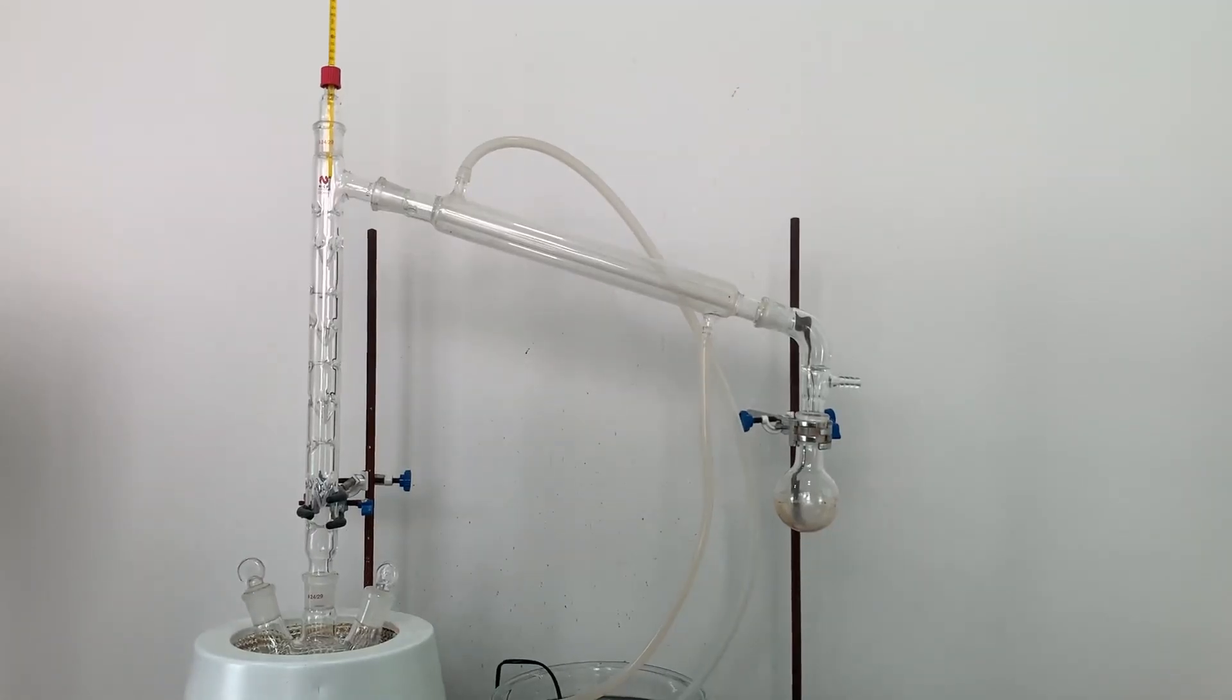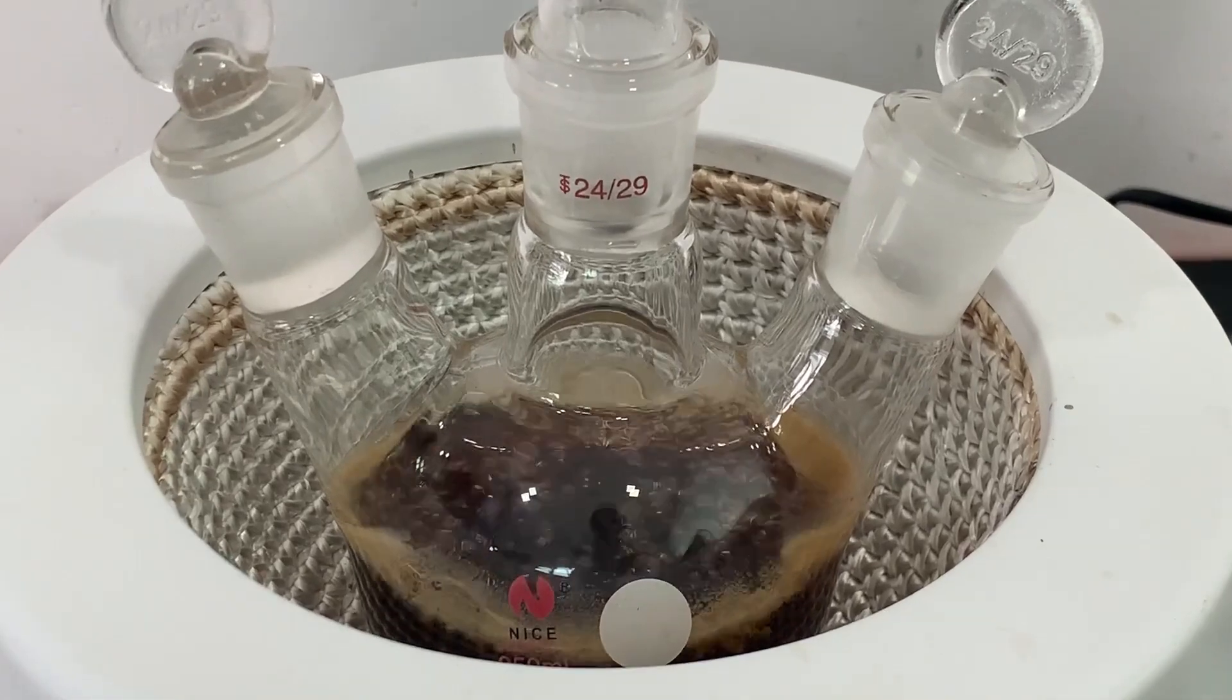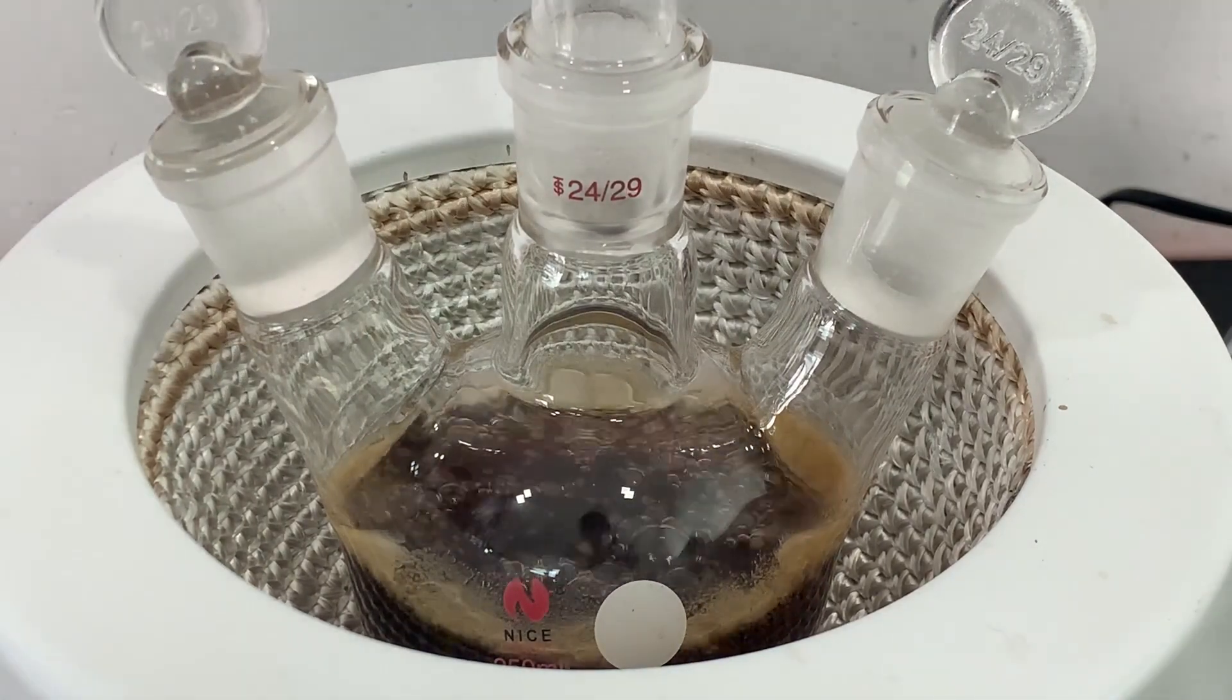A fractional distillation set is then set up. The flask is heated and the cyclopentanone started to boil and vapors traveled up the fractionating column.